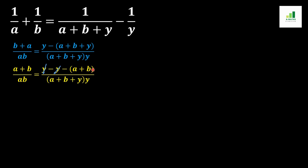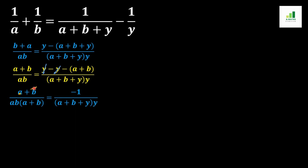In the next step, we get -(a+b) and this (a+b) goes into division with ab, giving (a+b)/(ab·(a+b)), giving -1. The other part of the equation remains the same. Now this (a+b) and this (a+b) cancel out with each other.